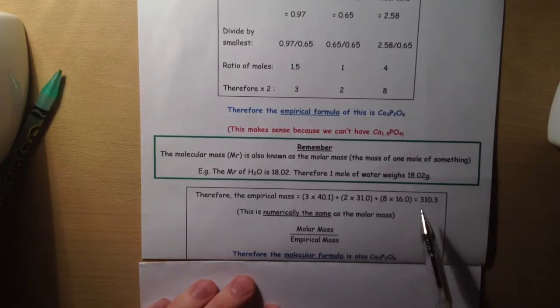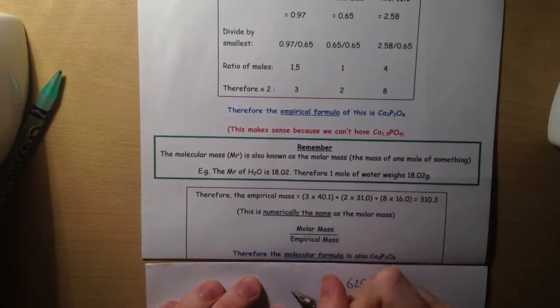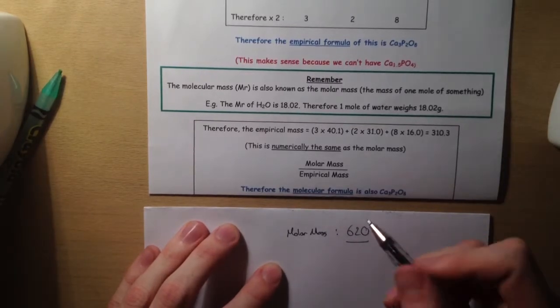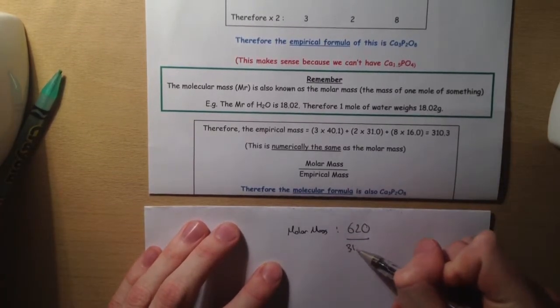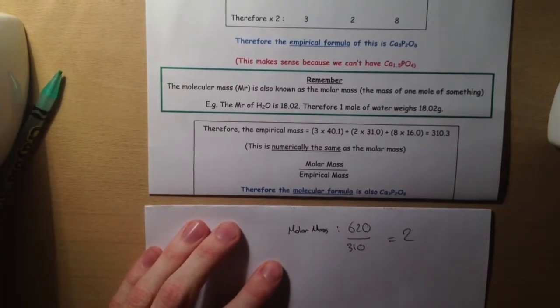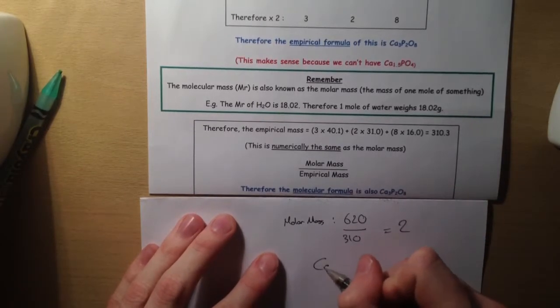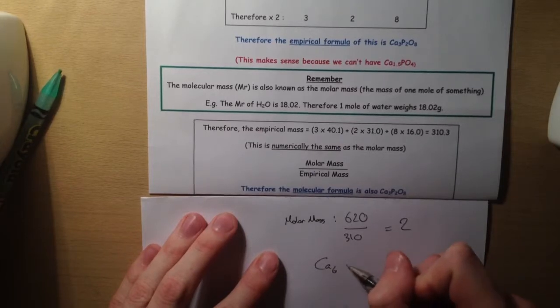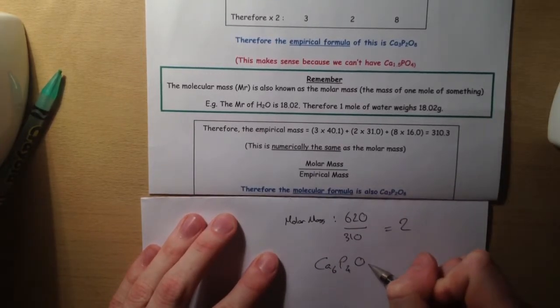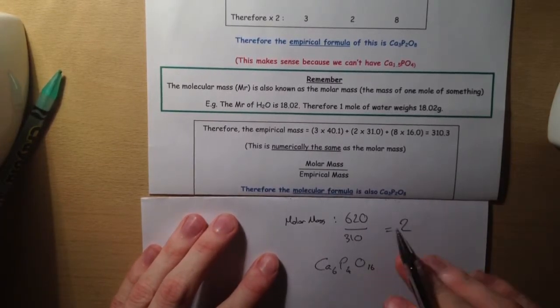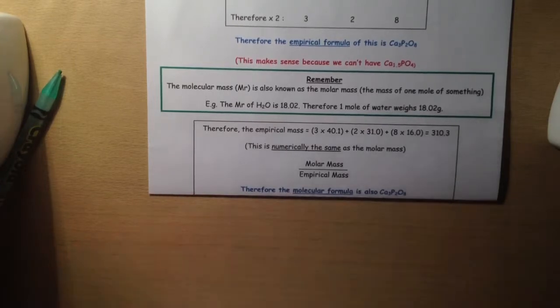Let's just say though, for argument's sake, that instead of the molar mass being 310, it was 620. If that was the case, if we divided that by the empirical mass which is 310, we're going to get 2. If that was to happen, we times each of these three things by whatever value we get, so in this case it would be Ca6P4O16. That would be the molecular formula if that was the molar mass.